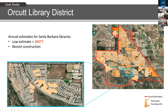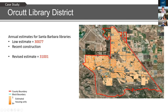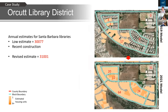Another example: Orcutt Library District. In 2019 I delivered an estimate of around 30,000 individuals and received a prompt call that it looked low — a constituent noted a new apartment complex wasn't being captured. Looking back at the data, there was an entire new construction subdivision not captured by the model due to erroneous geolocation of residential points from Pitney Bowes. With the 2021 iteration improvements, we fully captured all areas of residential use and distributed population proportionally, revising the estimate upward by around 1,000 individuals.